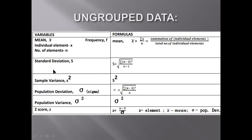For your sample variance, you're just going to square whatever values you have calculated for standard deviation, as s squared. For population deviation, sigma: your sigma is equal to the square root of the summation of individual element minus your mean, squared, all over the number of elements. To determine your population variance, it is calculated as population deviation squared, or sigma squared. For z-score, it is represented as z, where z is equal to individual element minus your mean all over your population deviation.